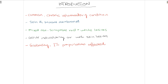Oral lichen planus is a common chronic inflammatory condition which can affect the skin as well as mucous membranes — in this case, the oral cavity. Lichen planus can affect the oral cavity or skin, or simultaneously affect both locations. The lesions of oral lichen planus are mixed and non-scrapable, which are red and white in color. If you try to scrape them, they will not come off, unlike Candida lesions which scrape off leaving behind a red inflamed area.